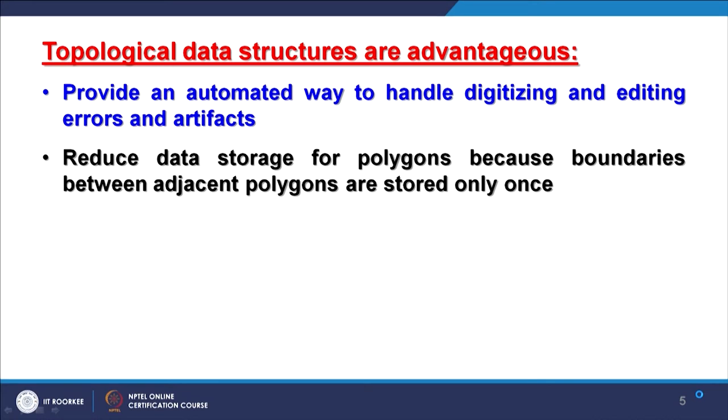Another advantage of topology is it reduces data storage, because adjacent polygon boundaries are stored only once. Without topology, in a spaghetti model, the common boundary between two polygons would be stored twice, requiring more storage space. In a real project, a map can have thousands of polygons, and the unnecessary space and inherent errors would become very significant.